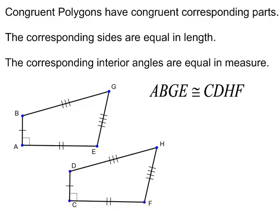If we have two polygons that are congruent, then their corresponding parts are congruent. And the converse is true. If all the corresponding parts are congruent, then the polygons are congruent. In this case, let's look at what we're given.